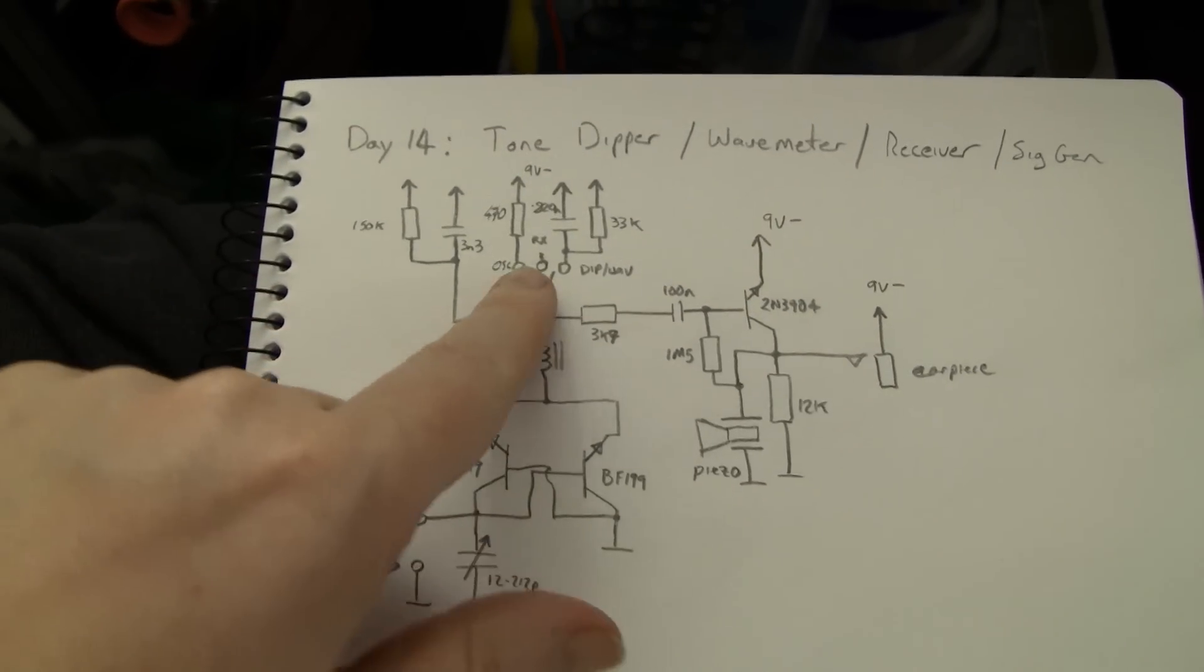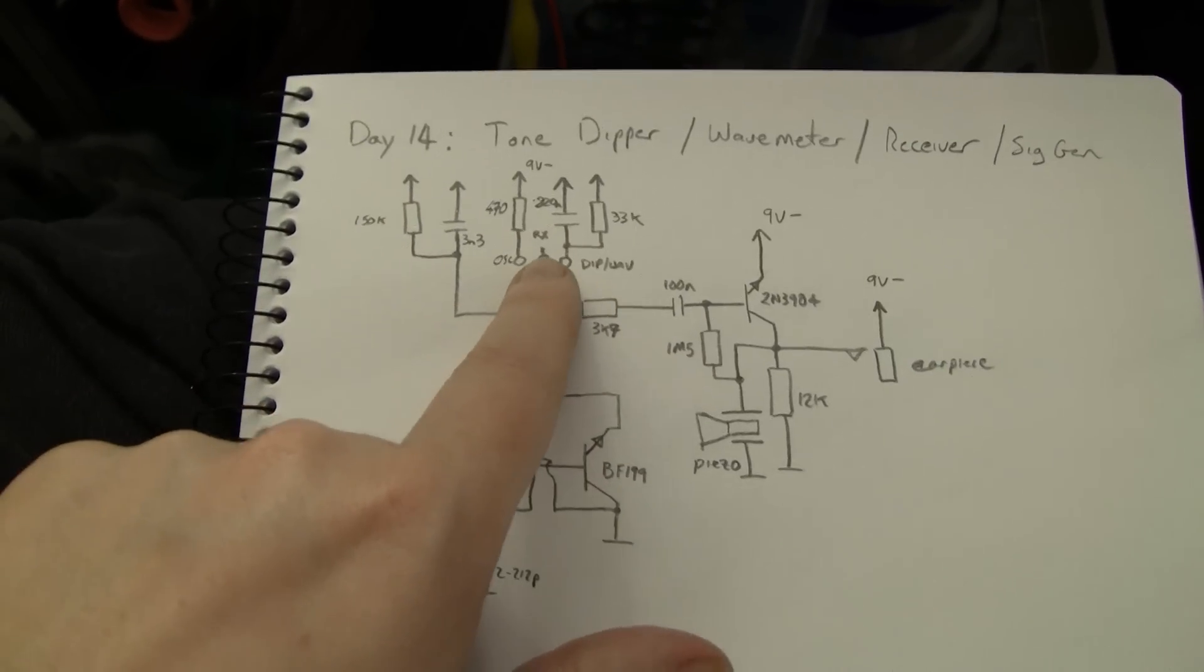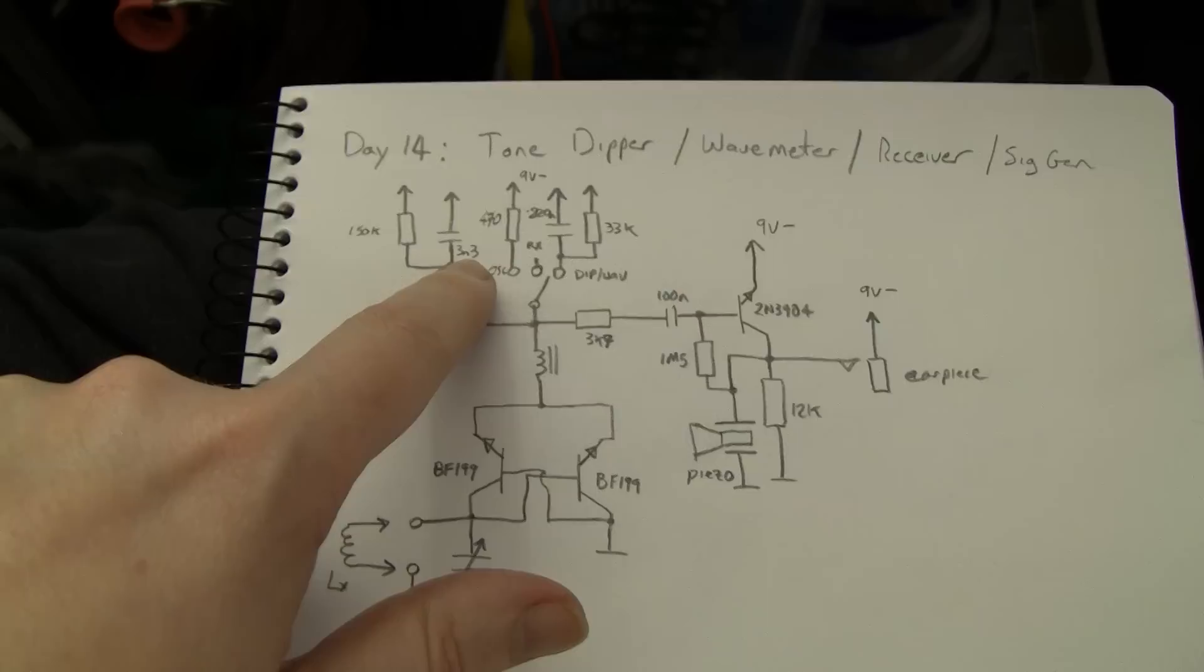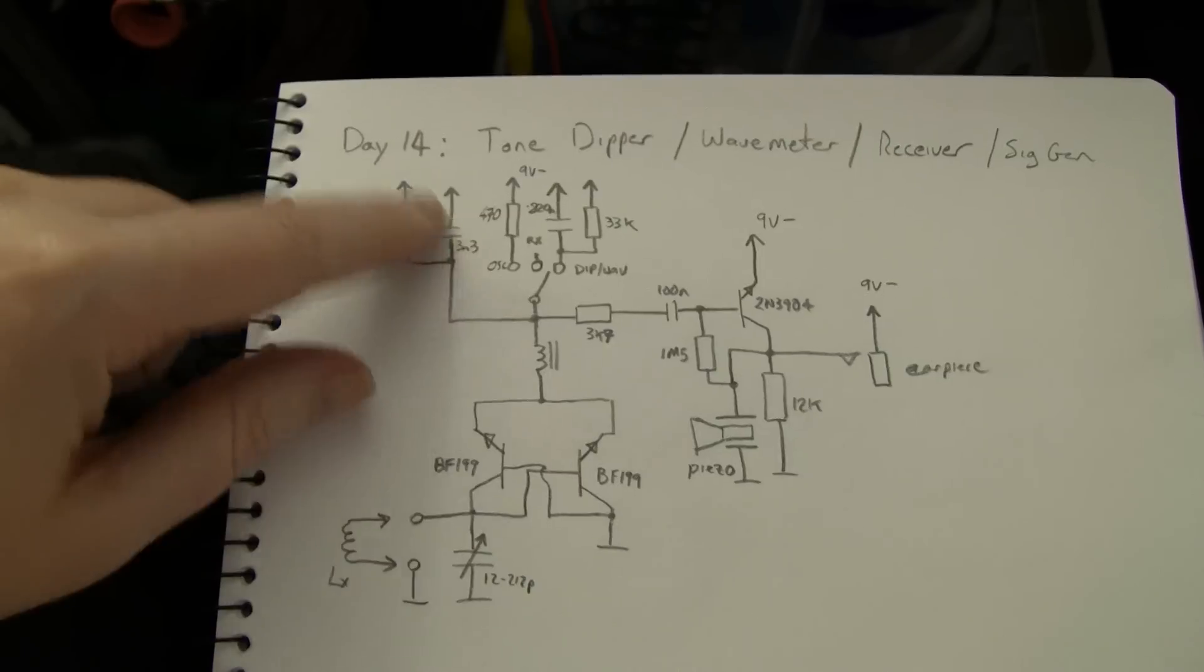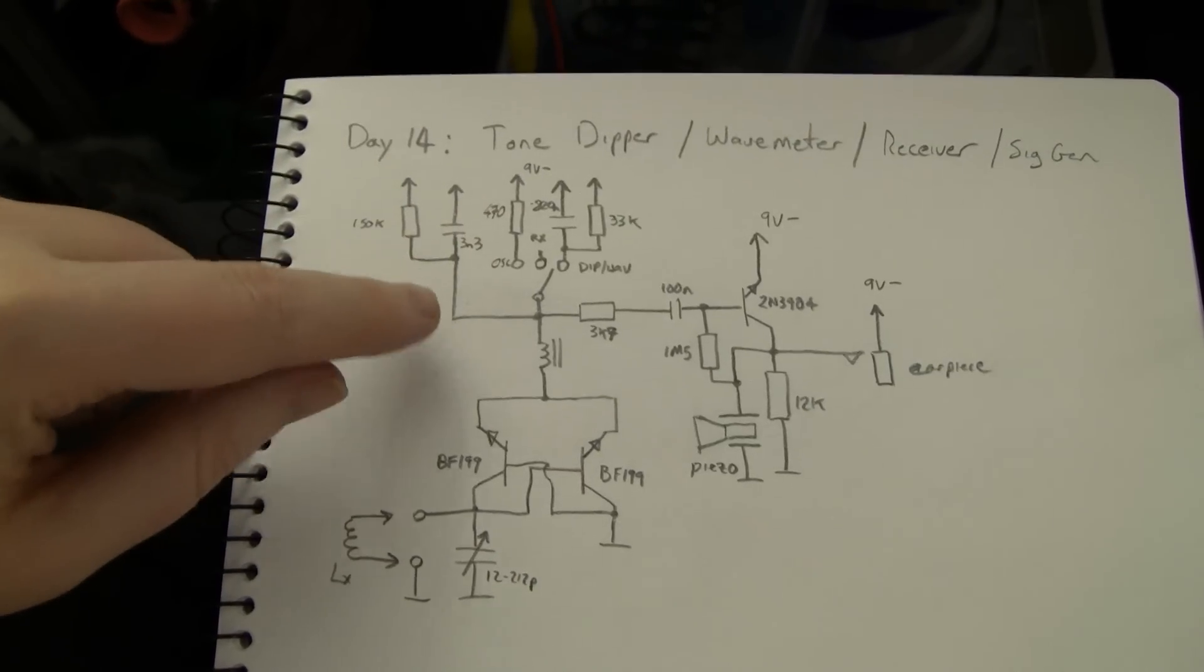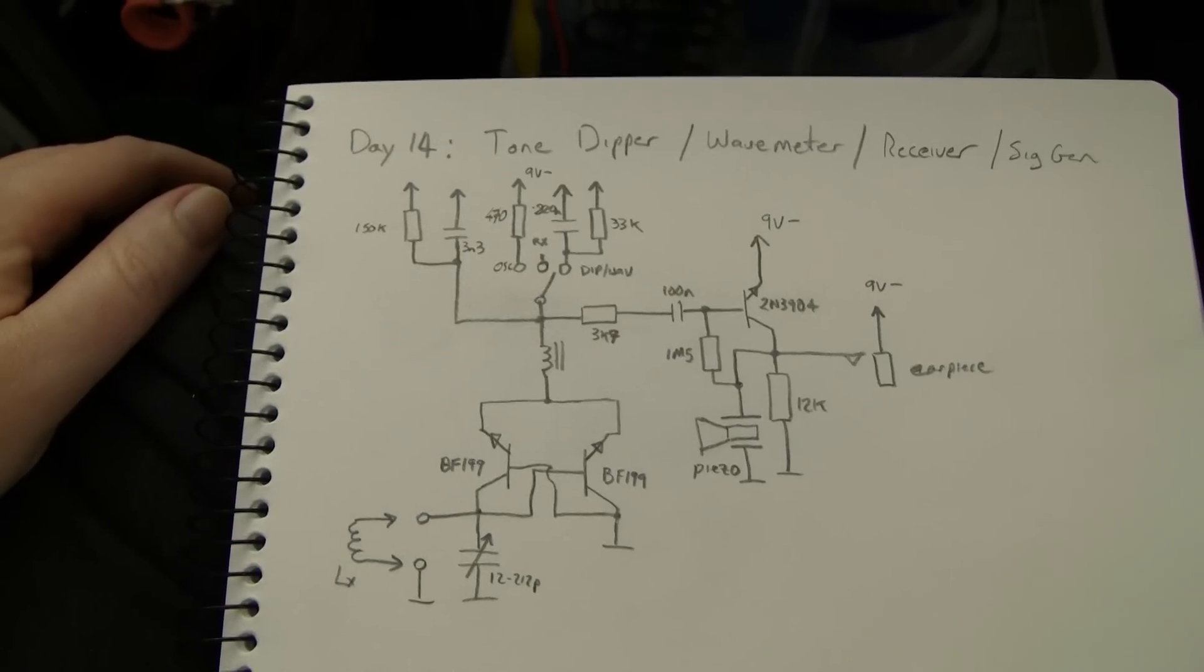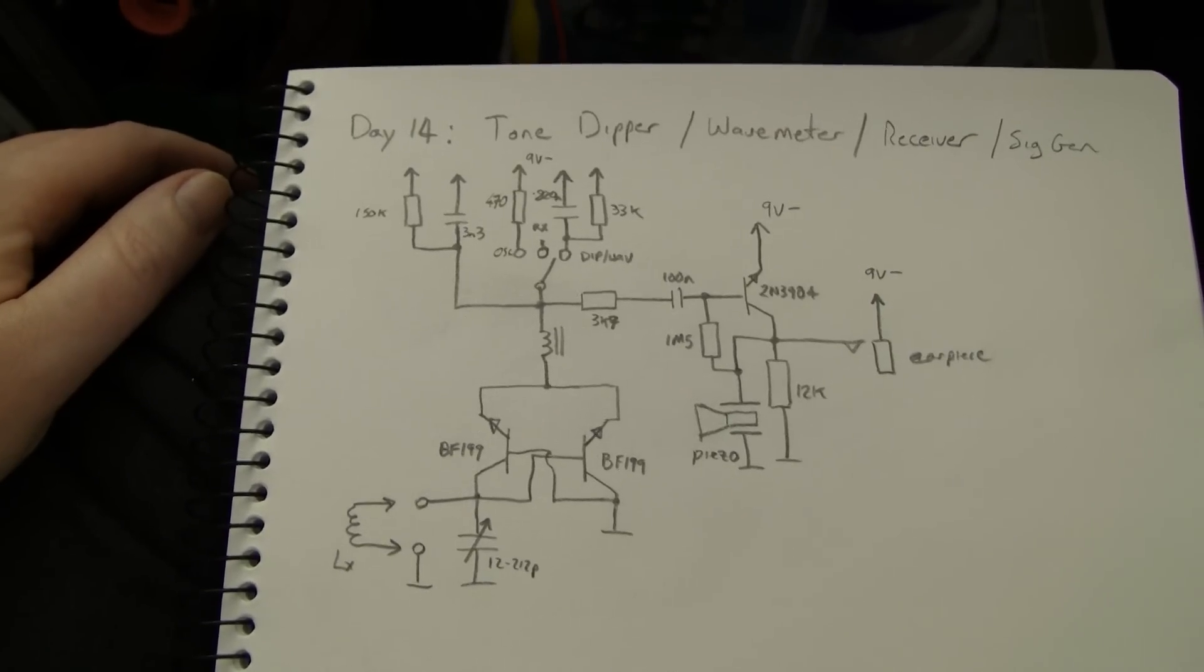So what I've done is I've got a centre-off single-pole double-throw switch. In the centre, it leaves a much smaller capacitance and a much larger resistance in the emitter circuit, and this causes the quench frequency to be quite high, about 150 kHz or so, or maybe up to 300 kHz, depending on exactly what coil you've got in here.